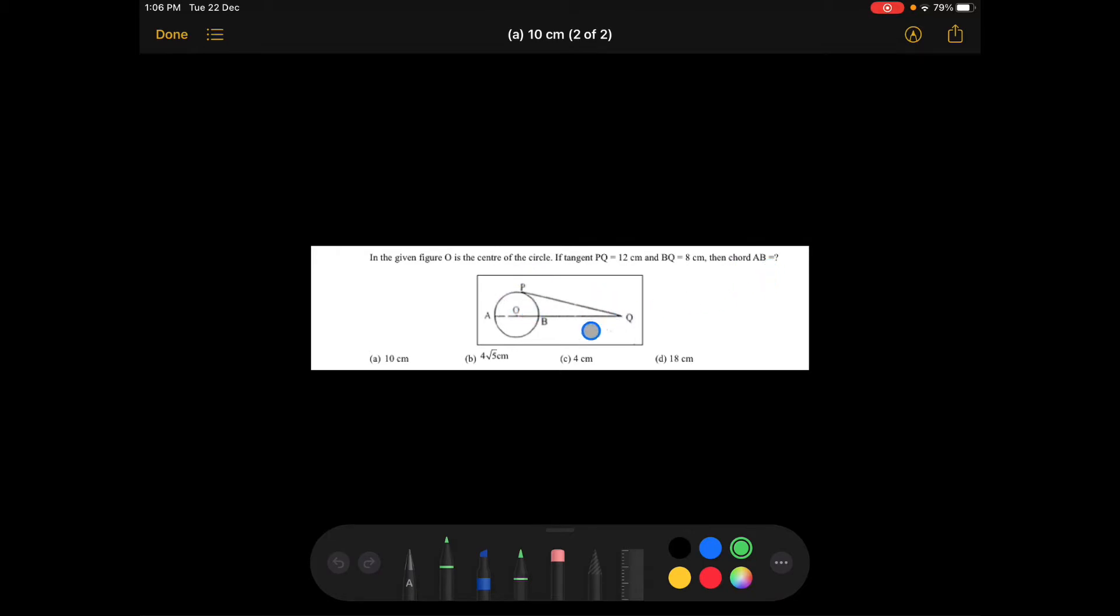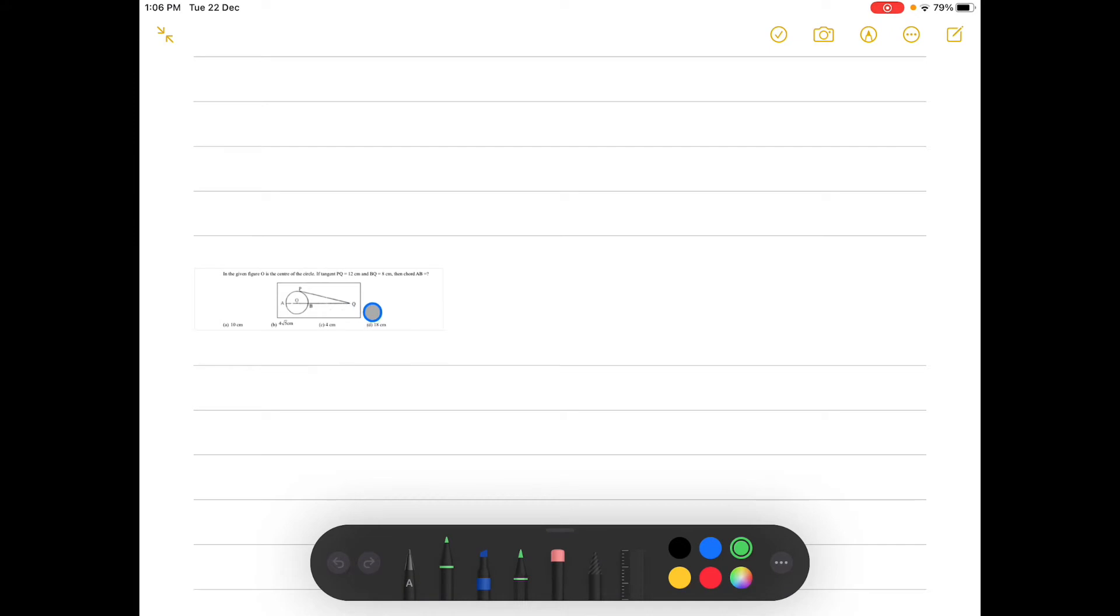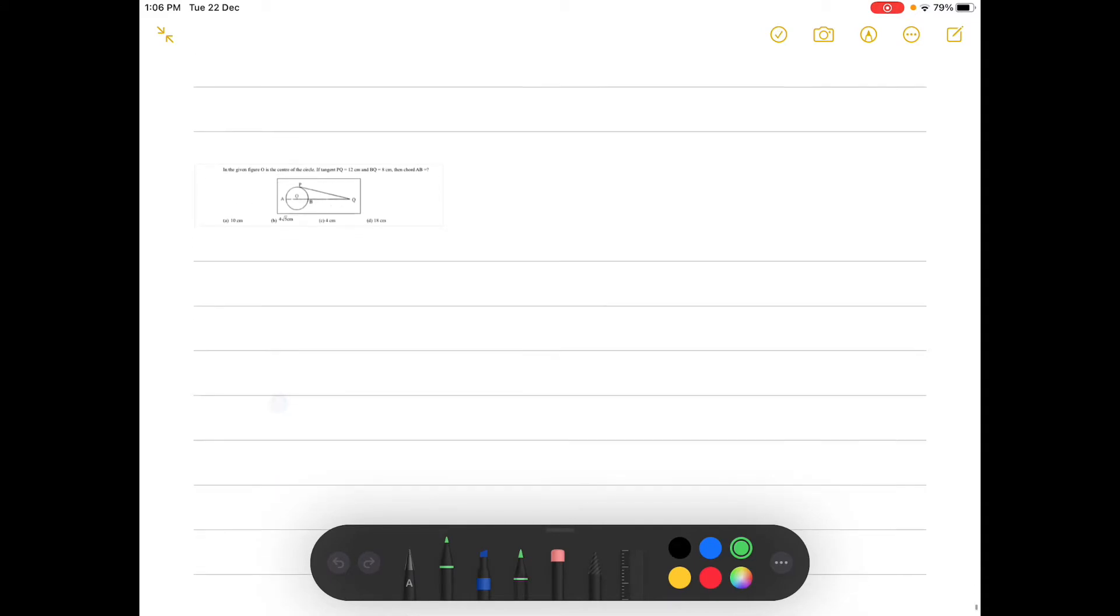So here is the figure and here are the options. First one says 10 centimeter, B is 4 root 5, C is 4 centimeter, and D is 18 centimeters. Now that we have seen the question, let's try solving this. The first thing given to us is about the tangent PQ.